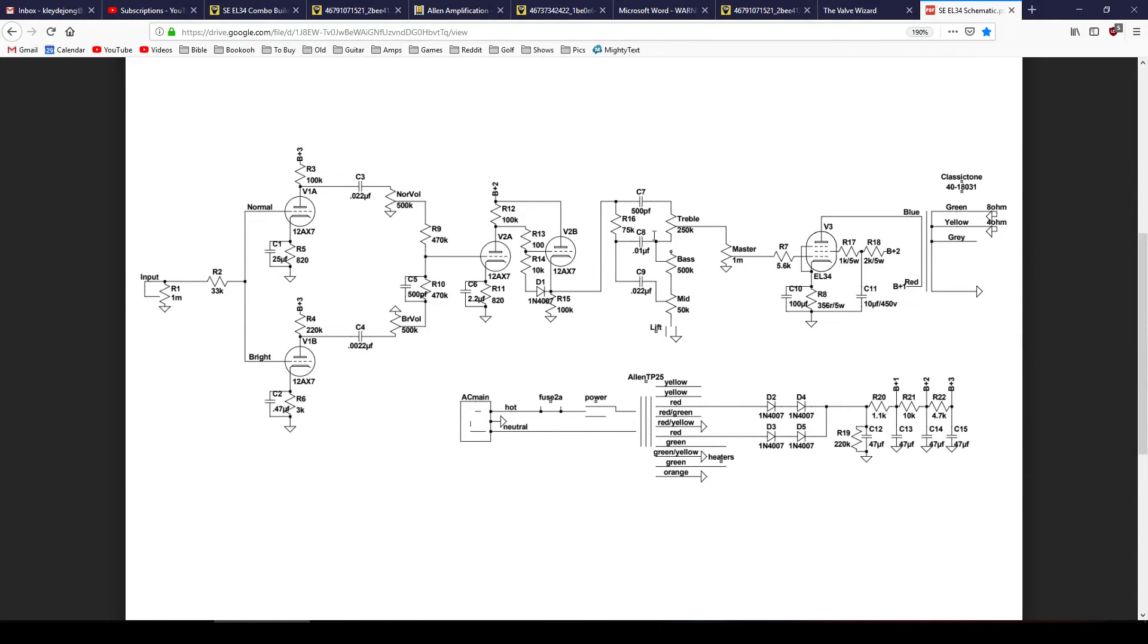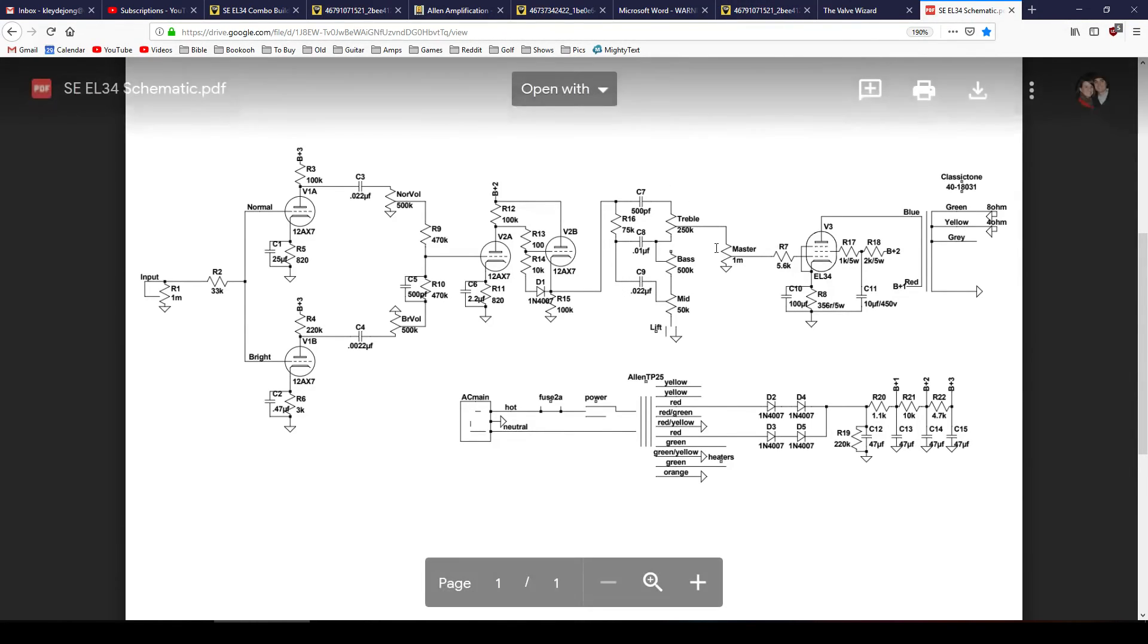Then I made some subtle tweaks to the tone stack: 75K slope resistor, 0.01 bass cap, 0.02 mid cap, a fairly large 50K mid pot. And then I also do have a lift control. When you break the connection from the mid pot to ground, you actually defeat the tone stack and send everything through. Whereas if you leave the mid pot in, it does allow the filtering to have a way to shunt some of those frequencies to ground. Just a nice little modification that I really enjoy.